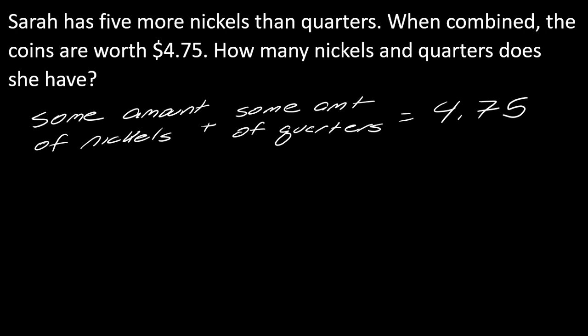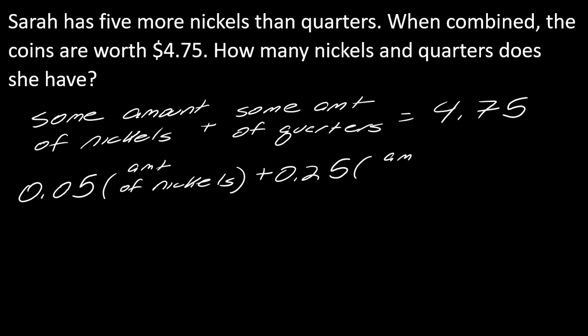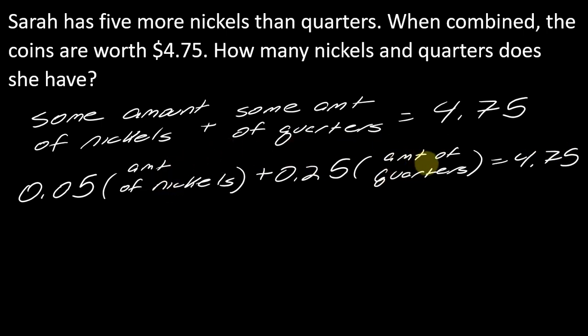What that tells me is I'm going to have to take the worth of a nickel times the amount of nickels, and I have to take what a quarter is worth — twenty-five cents — times the amount of quarters, and that'll get me to $4.75. This approach is what's going to lead me to getting to this dollar amount while also figuring out the quantity of each coin. This is how I know I'm going the right path — this is how many nickels and quarters does she have.